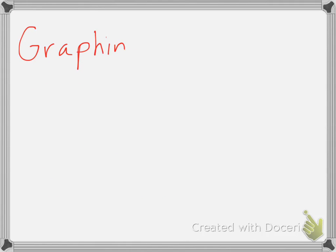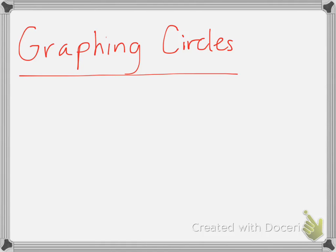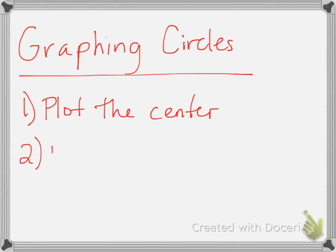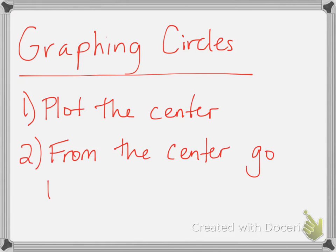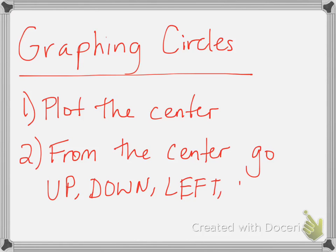In order to graph a circle, it's pretty simple — you only need two things. First, find the center and plot it. Then take the radius and go up, down, left, and right from the center. Make sure you're going from the center of the circle, not the center of the graph.